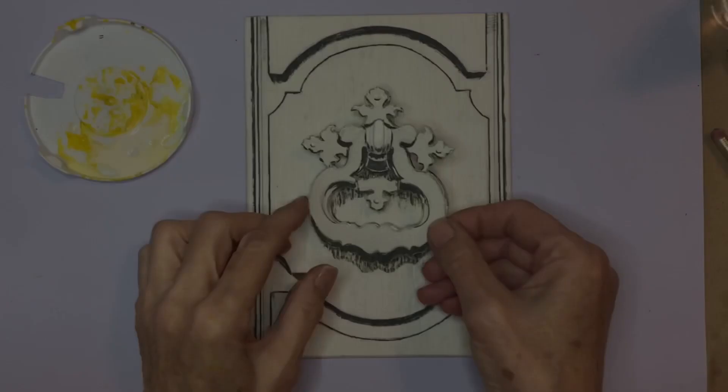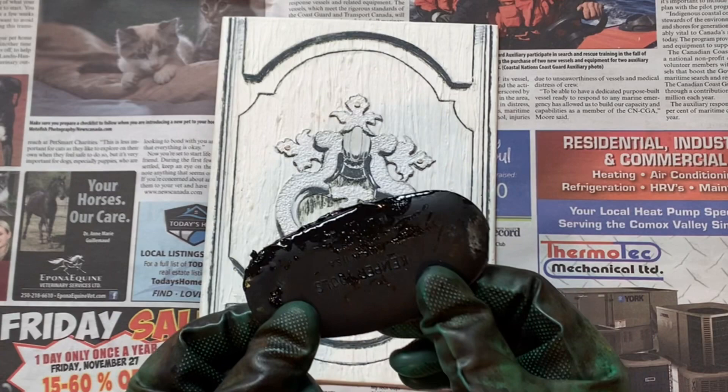Once the plate is dry, it's ready for the press. The printing begins with carding the ink onto the plate and trying to cover the plate without leaving too much behind.